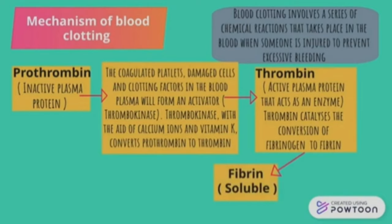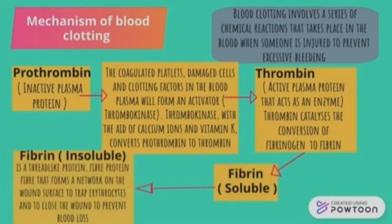Fibrin is first in a soluble form, which then turns into an insoluble form. The insoluble fibrin is a thread-like protein that forms a network on the wound surface to trap erythrocytes and close the wound, preventing blood loss.